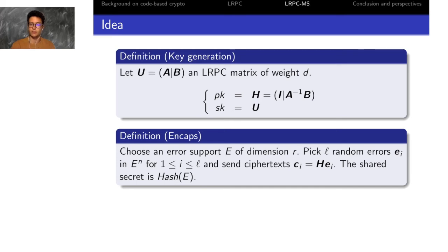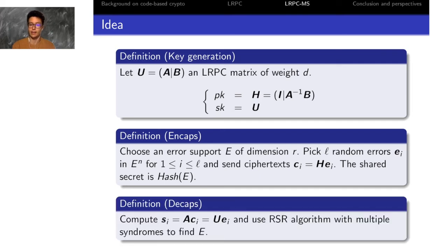But for the encapsulation of the secret E, instead of sending one syndrome, we will send L versions of the syndrome with L random errors of the same support E.